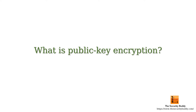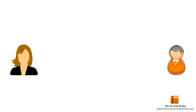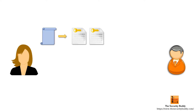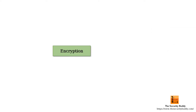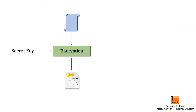What is public key encryption? In this video we will try to understand that. If we want to send a message to someone so that no unauthorized person can decrypt and read it, then we need to encrypt the message with a strong secret key. Encryption is a process using which plain text is converted into cipher text with the help of a secret key.